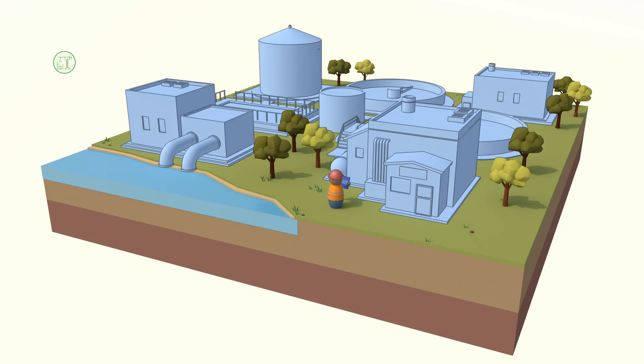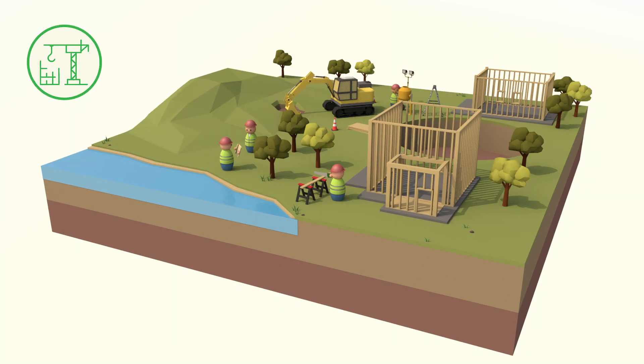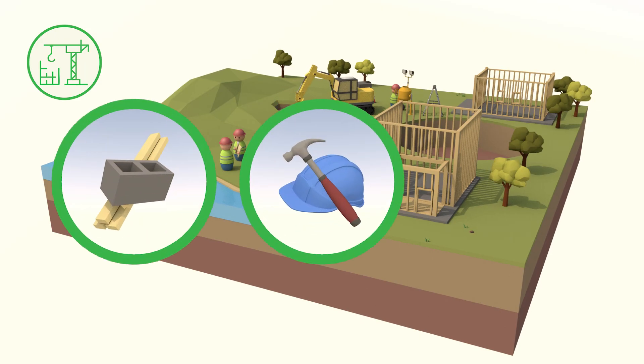Now we can finally begin the construction phase and get started building our treatment facility. This introduces multiple sources of expenses, which can include materials, labor, and inspections.